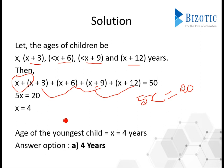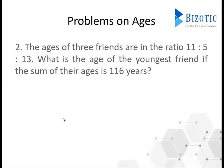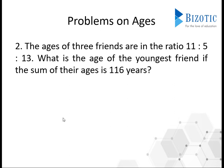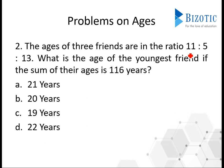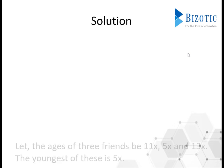I hope you are clear about this. Now let's move on to the second problem. The ages of 3 friends are in the ratio 11 is to 5 is to 13. What is the age of the youngest friend if the sum of their ages is 116 years? You have options for this question as well. Now let's look into the solution.